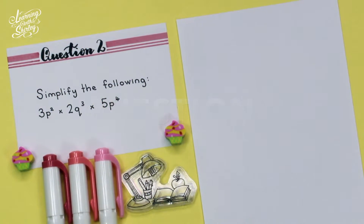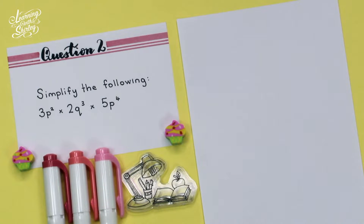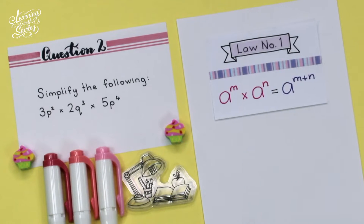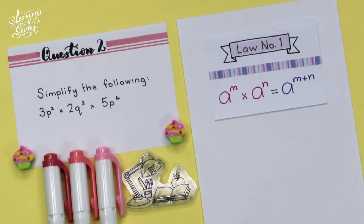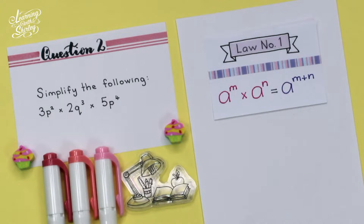For question 2, simplify the following: 3p square times 2q cubed times 5p power 4. For this question, we are going to use law number 1, which is a to the power of m times a to the power of n equals a to the power of m plus n.